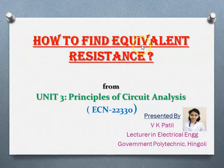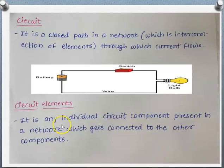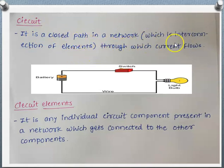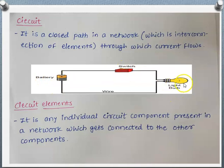Let's start with the very basic topic: how to find the equivalent resistance of a given circuit or network. First, some basic terms. A circuit is a closed path in a network, and a network is the interconnection of elements through which current flows. The figure shows a simple circuit consisting of one battery, one switch, and one light bulb as a load, along with connecting wires.